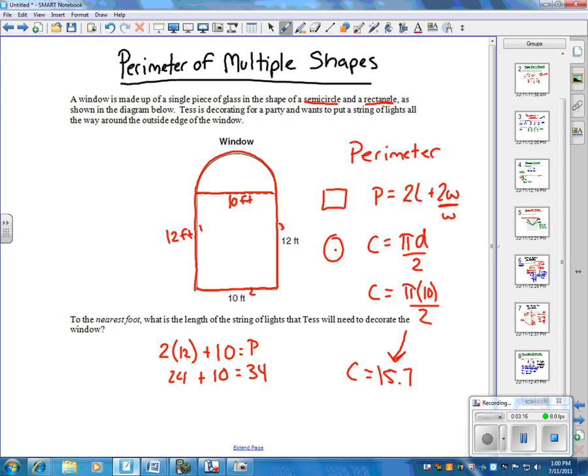So now we've got 34 and 15.7, which gives us a total of 49.7. But it says nearest foot, so 49.7 rounds to 50 feet. She's going to need 50 feet of lights to go around that entire window. When you see a question like this, make sure you think about what sides are going to be used, because sometimes you have to adapt a formula to fit the situation.